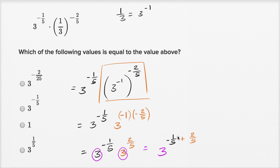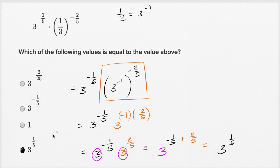But now this is pretty straightforward. This is going to be equal to three to the negative one-fifth plus two-fifths, which is just one-fifth. And there you have it — three to the one-fifth power.